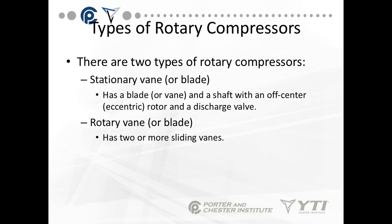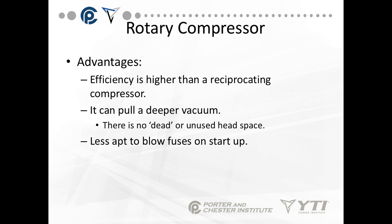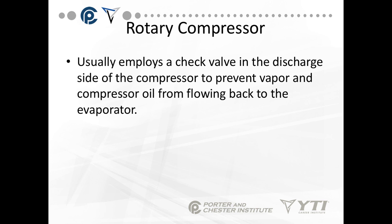There are two types of rotary compressors. One is called a stationary vane or blade — it has a blade or vane, a shaft with an off-center rotor, and a discharge valve. The rotary vane or blade has two or more sliding vanes. The advantages of a rotary compressor: efficiency is extremely high, much higher than a reciprocating compressor. It can pull a deeper vacuum because there's no dead or unused space. It's less apt to blow fuses on startup since we have a rotating device rather than a piston. You'll find rotary compressors frequently in residential air conditioning systems. They usually include a check valve on the discharge side to prevent vapor and compressor oil from flowing back to the evaporator.